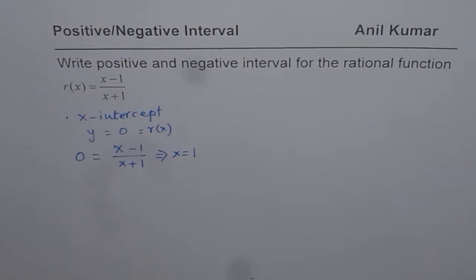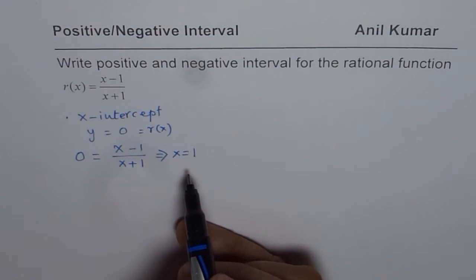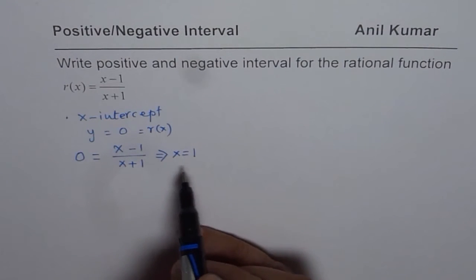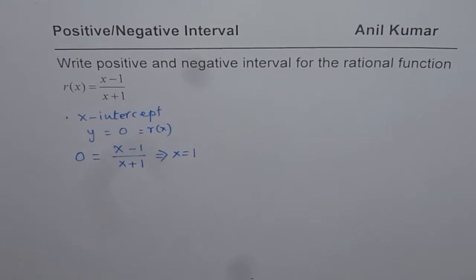Now once you find x-intercept, you need to figure out on which side of this intercept is the function positive and on which side it is negative.